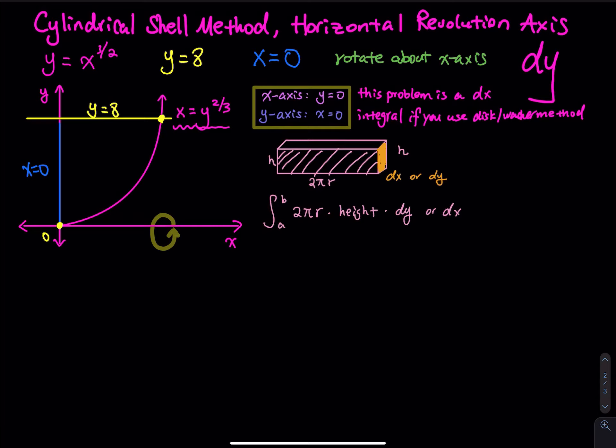So what is the concept of the shell method? Take a look at the rectangle right there. So you have the integral from a to b, 2πr times height, and then either dy or dx. So since this is a dy problem, the a and the b will be in y. So the 2πr is the base of the rectangle, and then the height is the function.